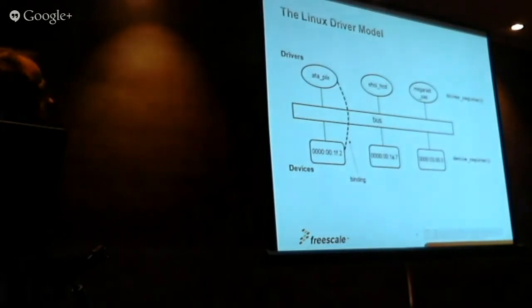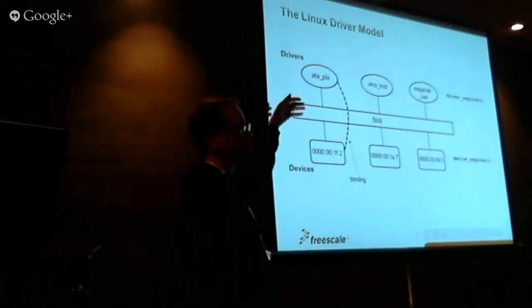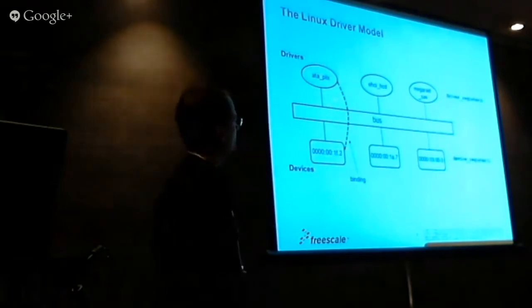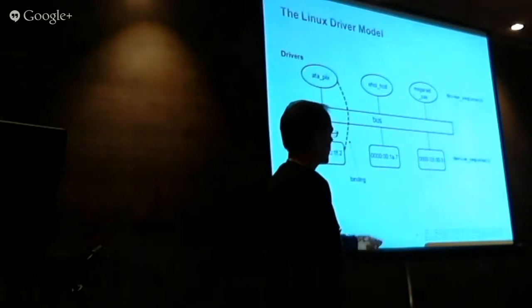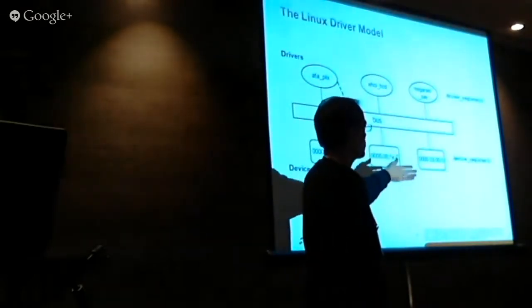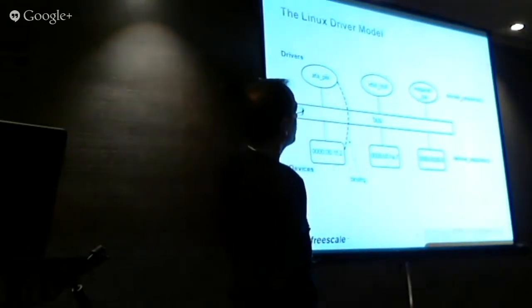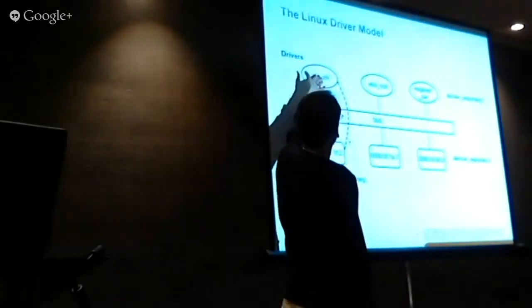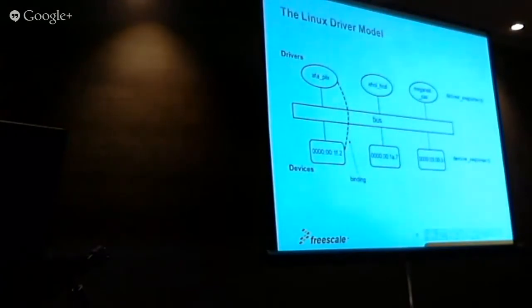Linux has a driver model, and it's fairly simple. There's a bus, and attached to the bus you have devices and drivers. For example, this is a PCI example. Devices, when they are discovered, get registered with a PCI bus, and then drivers register themselves to handle certain device types. The association of a driver to a device is called binding, and that's an important concept with VFIO and how things are bound and unbound.